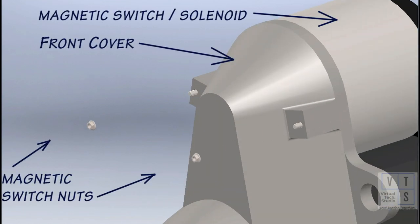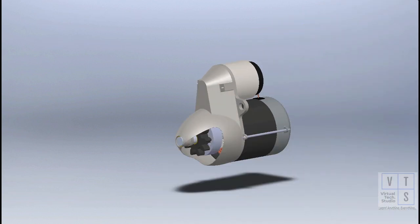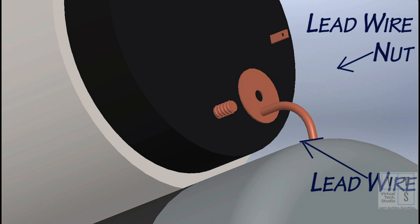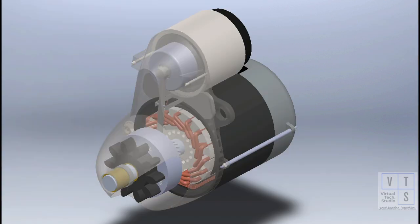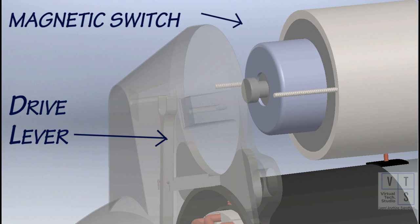Remove two nuts of magnetic switch. Remove the lead wire nut from the magnetic switch and disconnect the lead wire. Then take out the magnetic switch, such that the inside hook is disconnected from the drive lever.